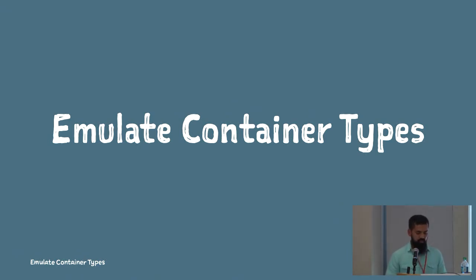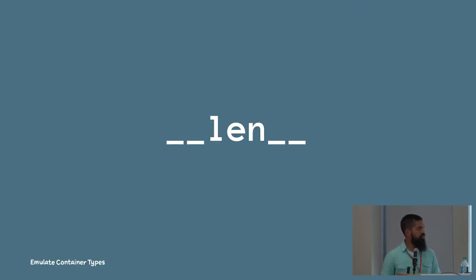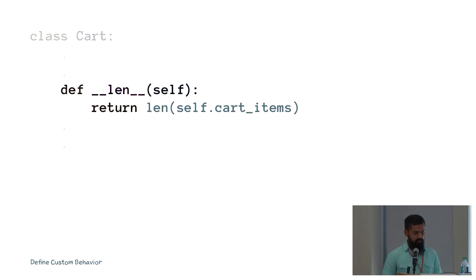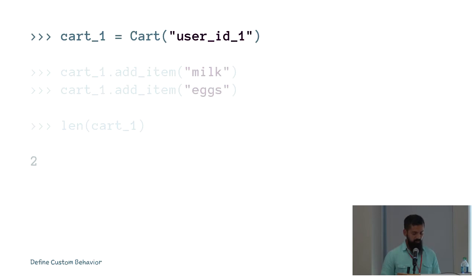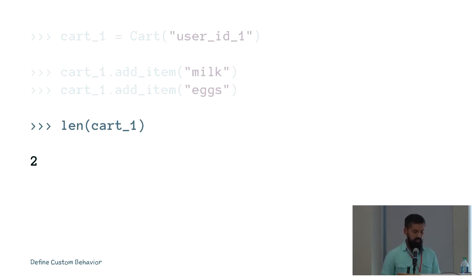The last group of magic methods lets you emulate container types. Container types can either be sequences — think lists — or mappings, like a dictionary. For the cart class we've been looking at, we'll treat it as a mapping container. The first magic method is dunder len. You might want to figure out the number of items in your cart, and instead of implementing a getItemCount function or calling len on cart_items directly, if you implement dunder len you can call len on the object itself. Here I'm simply returning the length of the dictionary.